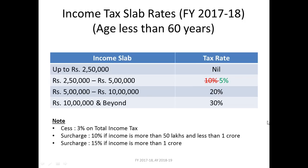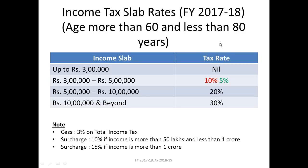For those whose age is more than sixty years and less than eighty years, all things are the same except that from zero to three lakhs there is no tax to be paid. So instead of two lakh fifty thousand, the exemption limit is increased to three lakhs for senior citizens aged sixty to eighty years. Income between three lakhs to five lakhs is taxed at five percent, then twenty percent and thirty percent for higher brackets. The cess of three percent and surcharges of ten percent and fifteen percent remain the same.